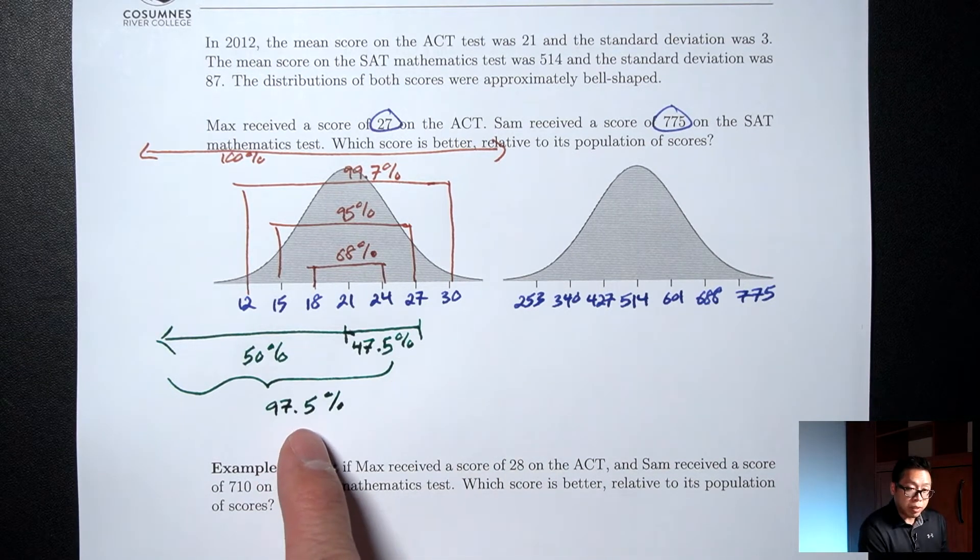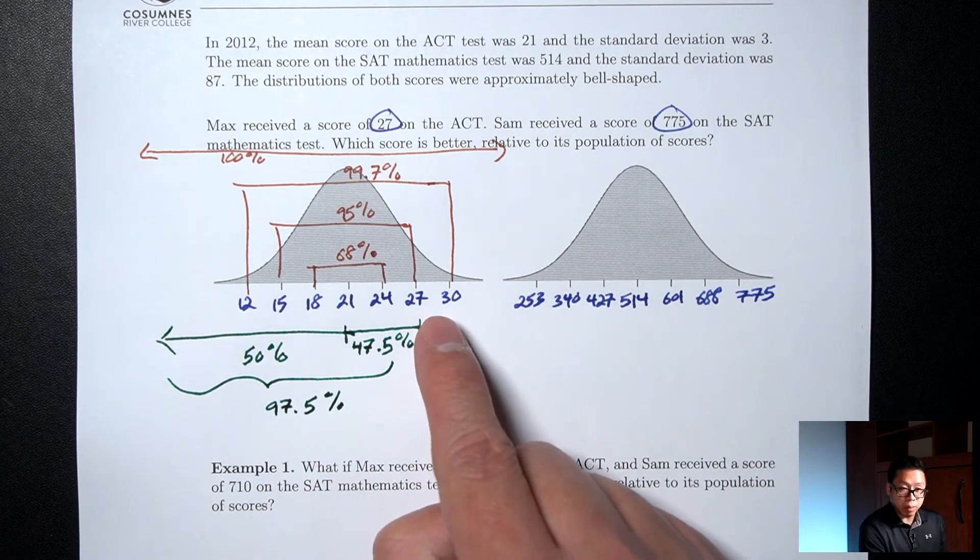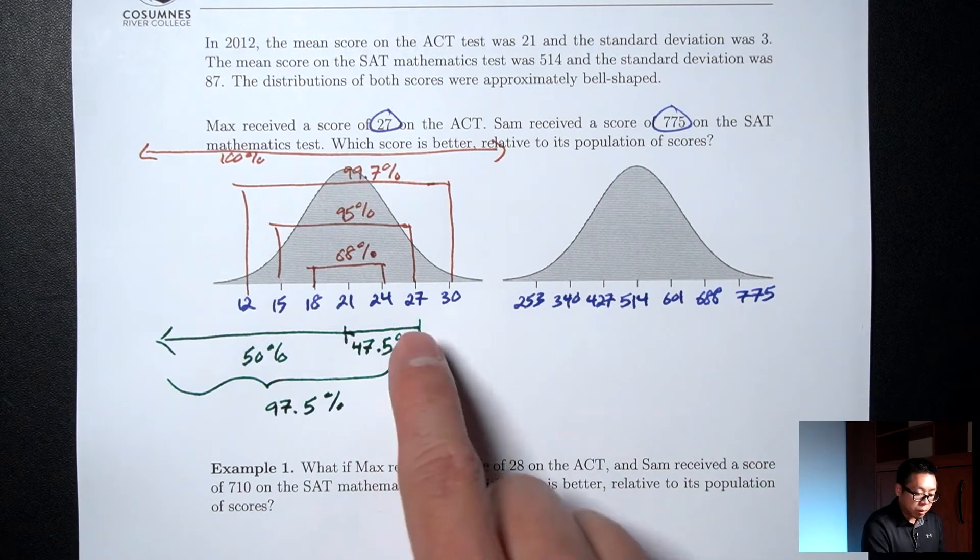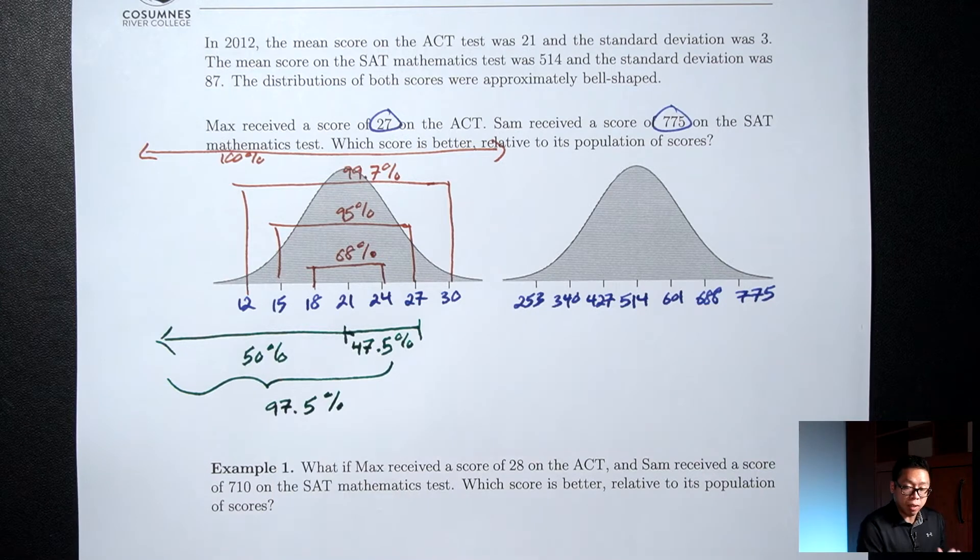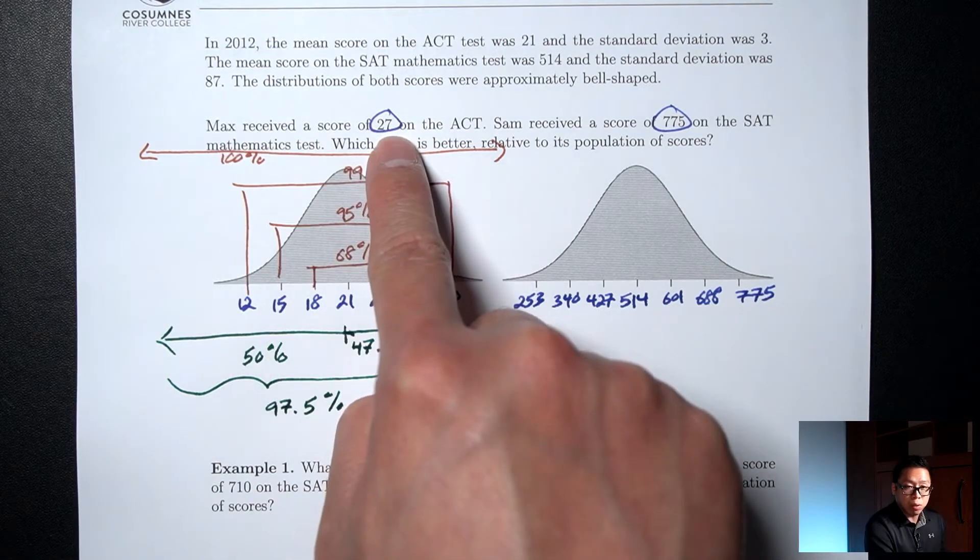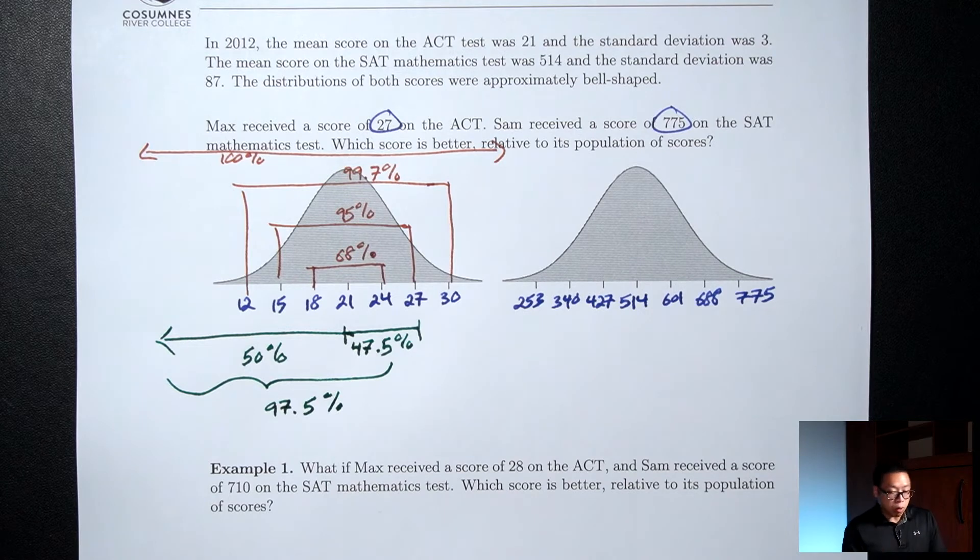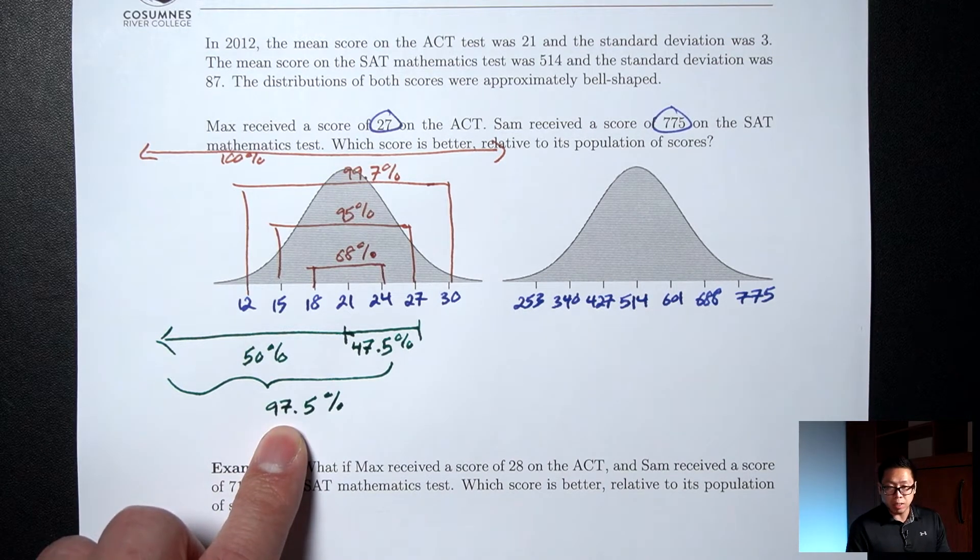So 97.5% is to the left of 27. What does that mean? That means that a score of 27 is better than 97.5% of all test takers. So Max, who got a score of 27, got a higher score than 97.5% of all test takers.